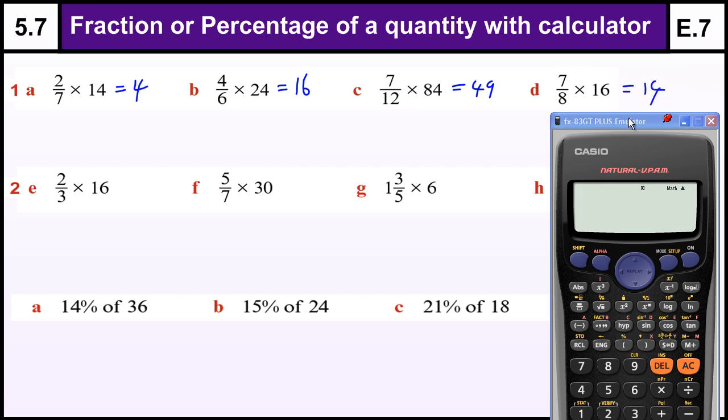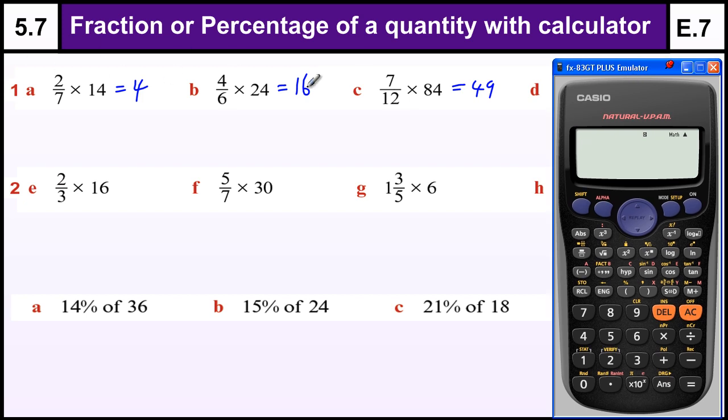So we could do it that way or we could use the calculator. Let's run through these first three again with the calculator. So, 2 over 7, now these new calculators allow you to type the number, the question, exactly as you see it on the page. So there should be no problem with getting the right answer to the question. This is 4.